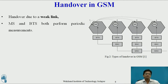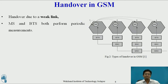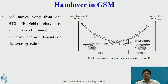When is the handover decision made? The handover decision is based on a weak signal, identified by periodic measurements of the mobile session and BTS on both uplink and downlink. Figure three shows the handover decision depending upon the received signal, which is measured based on uplink and downlink of the BTS and MS.